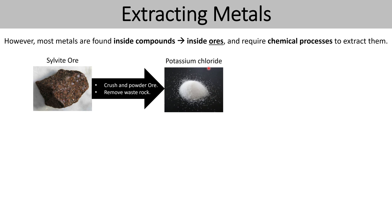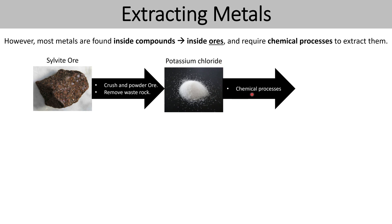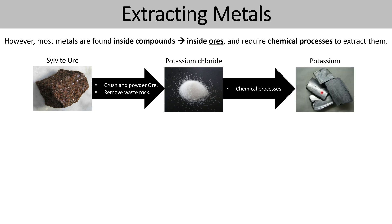Potassium chloride doesn't have the typical properties of a metal — it's not shiny, it doesn't conduct electricity whilst solid, and it's not malleable, so it can't be formed into different shapes easily. We need to remove the chloride part so it becomes an element, not a compound. In order to do this, we're going to carry out chemical processes which change it chemically, and then we'll be left with pure potassium — the elemental metal — with all of the desired properties.